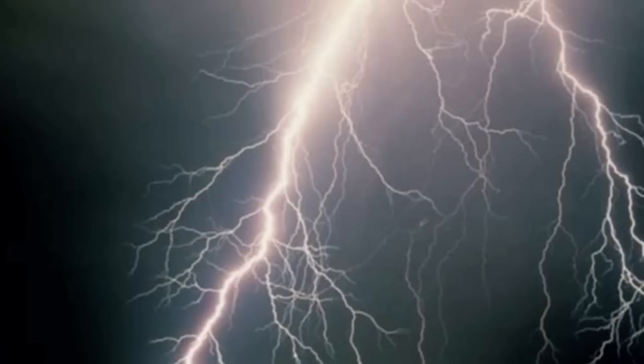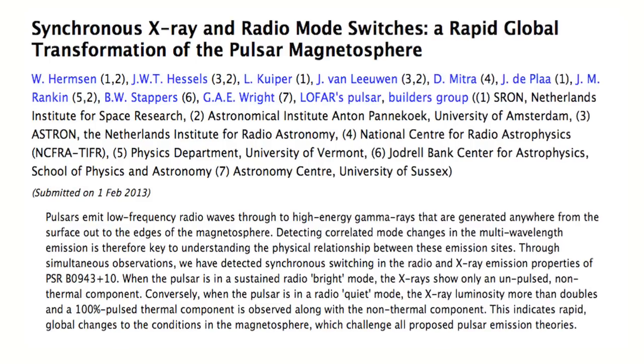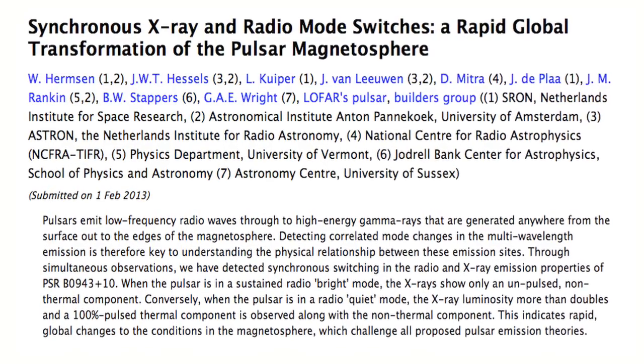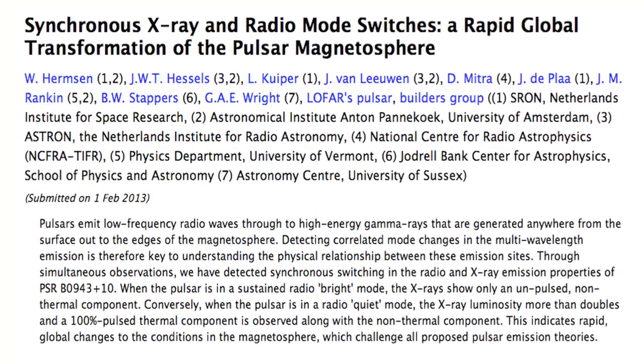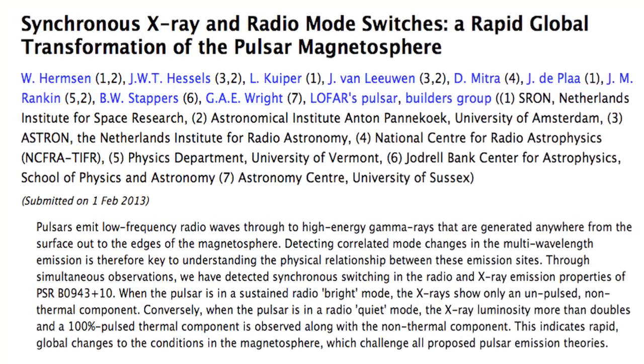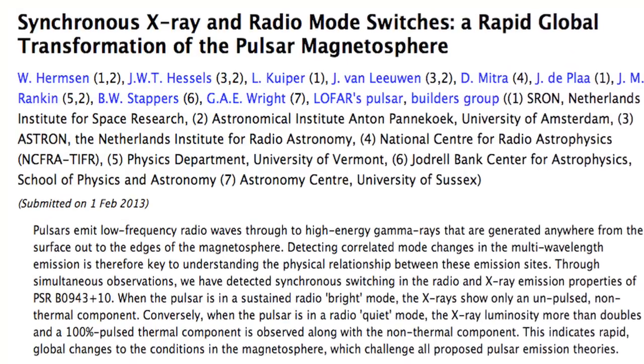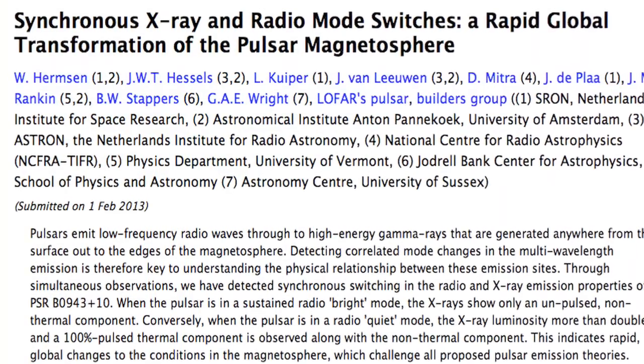It has been suggested that a more useful analogy to pulsar flashes is the complex radio signals induced in Earth's ionosphere by powerful lightning. This clue could help to explain the evidence, inexplicable in the standard model, of pulsars switching from radio to X-ray emissions, since lightning can produce both.